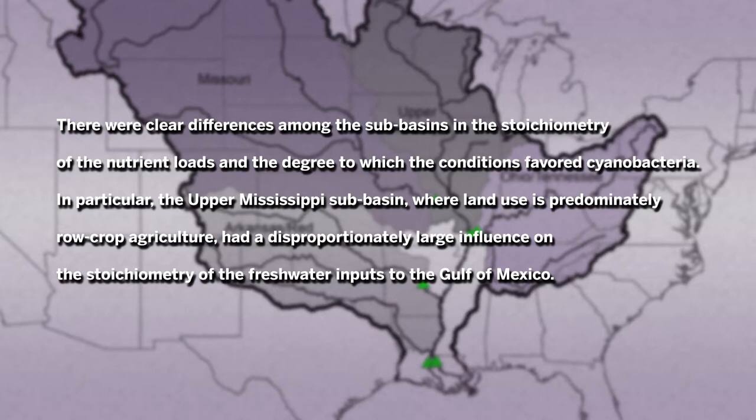In particular, the Upper Mississippi sub-basin, where land use is predominantly row crop agriculture, had a disproportionately large influence on the stoichiometry of the freshwater inputs to the Gulf of Mexico.